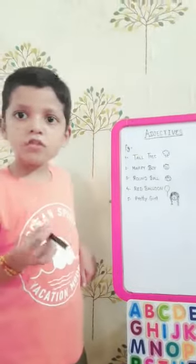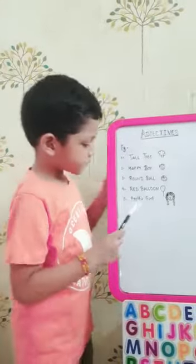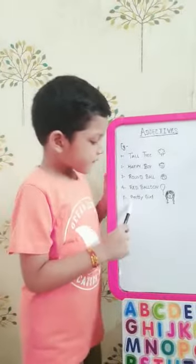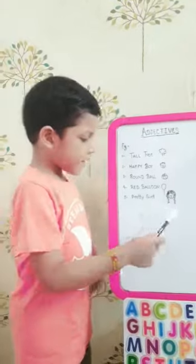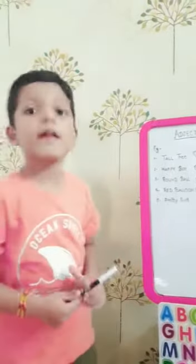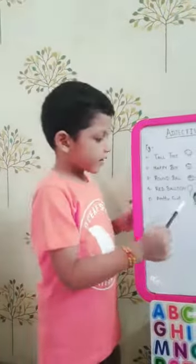The last example is pretty girl. Pretty is an adjective and girl is a noun.